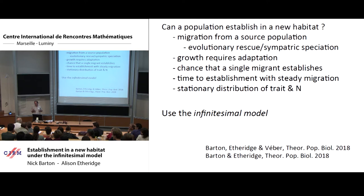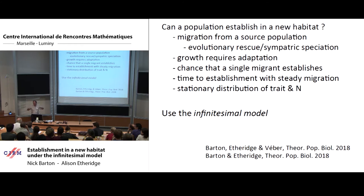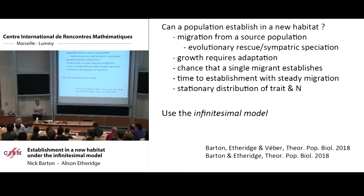Even with one or a few individuals, the infinitesimal model is simply making a statement about the distribution of trait values of offspring, and that will hold as long as there's not too much inbreeding. We are assuming there's enough variability — enough loci underlying the trait — that there's not so much inbreeding that the whole thing breaks down. This isn't unreasonable as long as there are hundreds of loci involved, because there's a lot of variability held in heterozygous loci, hiding half the variance in the population.